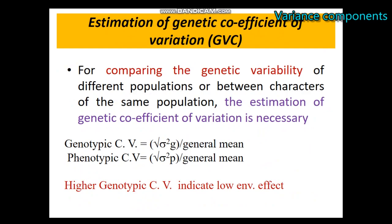Coming to the estimation of the genetic coefficient of variation: the GCV helps to compare the genetic variability within or among groups using different characters. The genotypic coefficient of variation is calculated as the square root of the genotypic variance divided by the mean, and the phenotypic coefficient of variation is the square root of the phenotypic variance divided by the mean. When we get a high genotypic coefficient of variation, the effect of the environment is less.